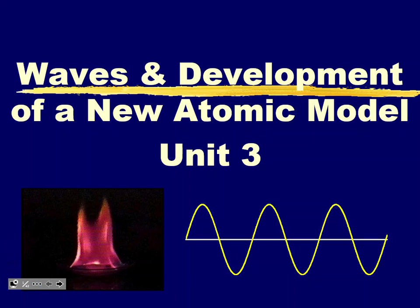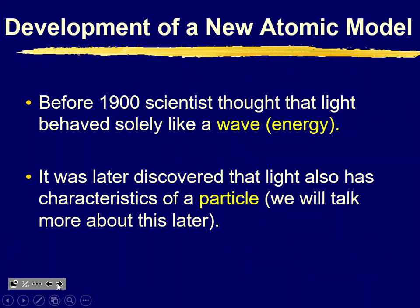Going back over waves real quick since it's been a long break. Before the 1900s, scientists thought that light behaves solely like a wave, but later on it was clear that light also has characteristics of particles. The idea that light can behave as both a particle and a wave — those particles were labeled as photons.